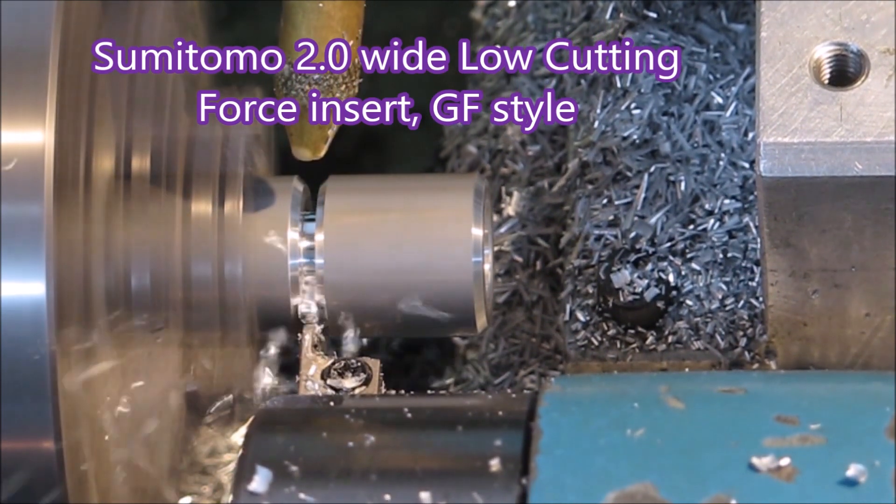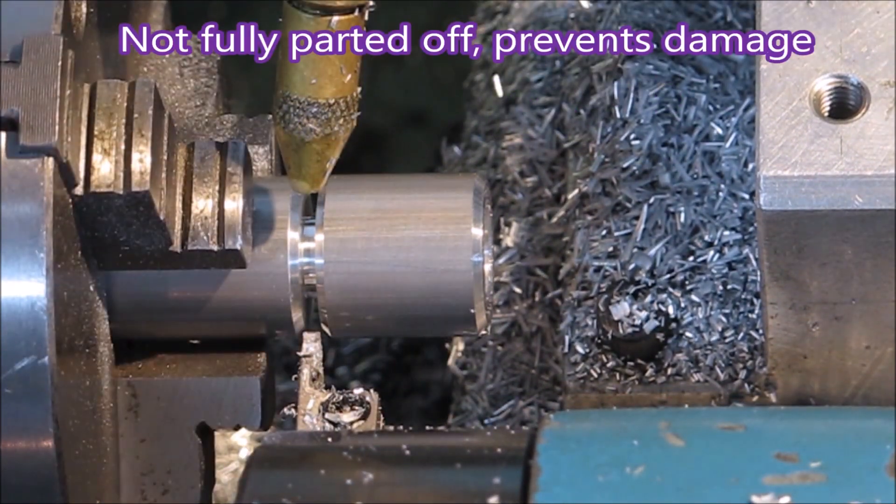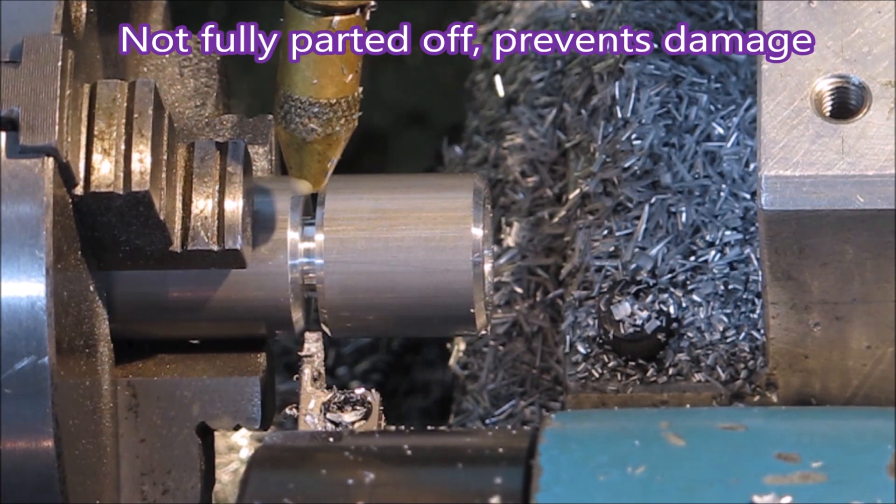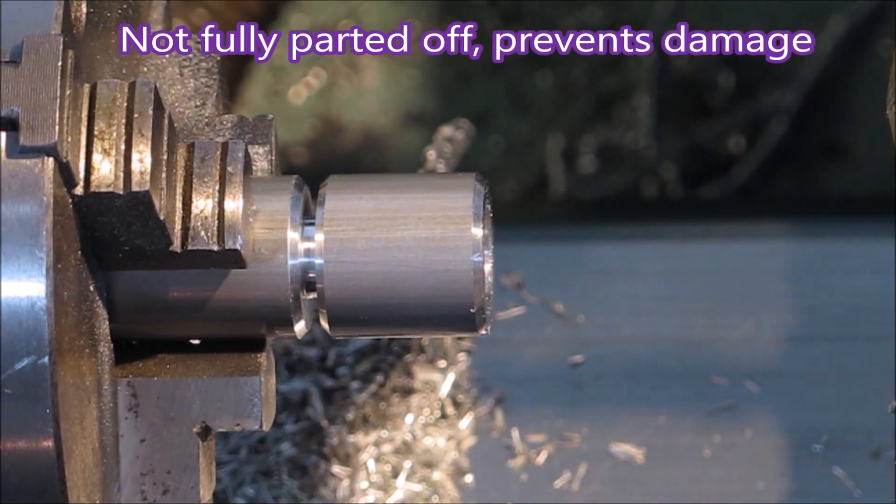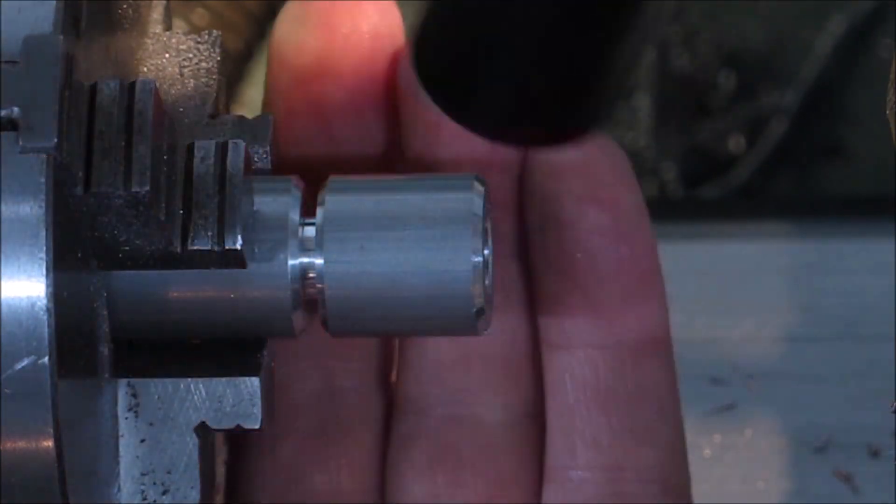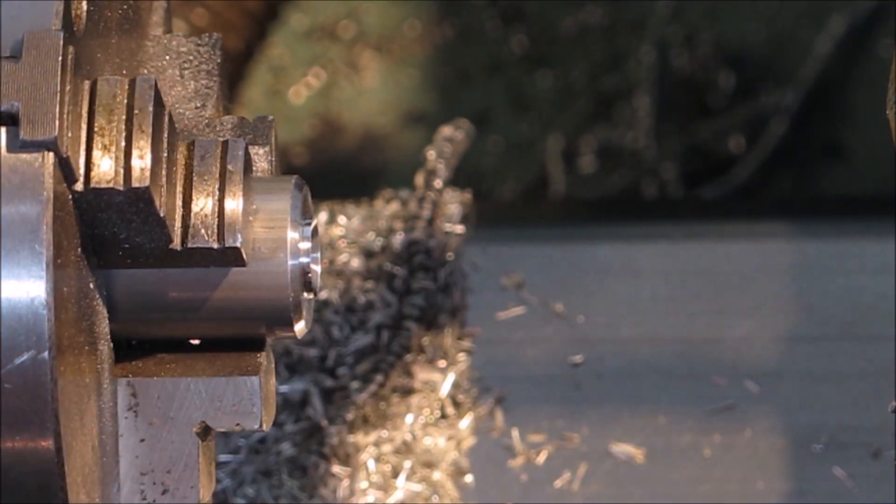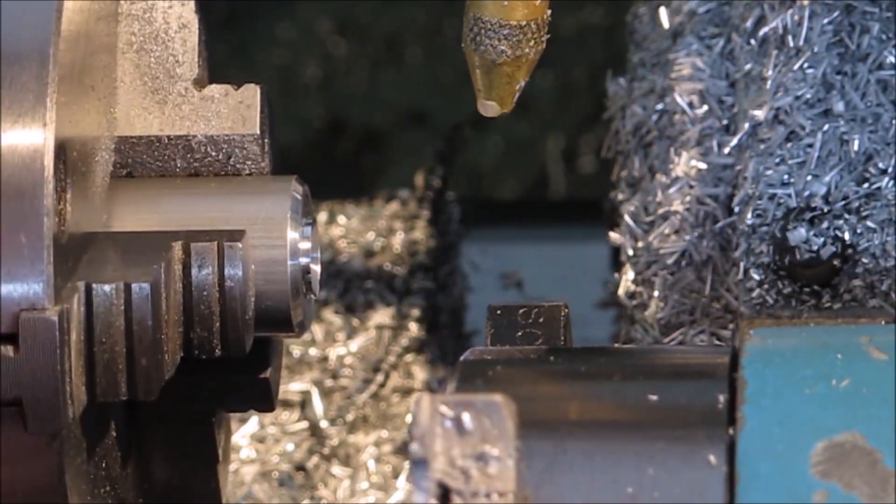That's a Sumitomo GF type insert. They're made for grooving and parting. I have used it for cutting sideways but they're really not meant for that. So there's the part being tapped off to stop it being damaged.